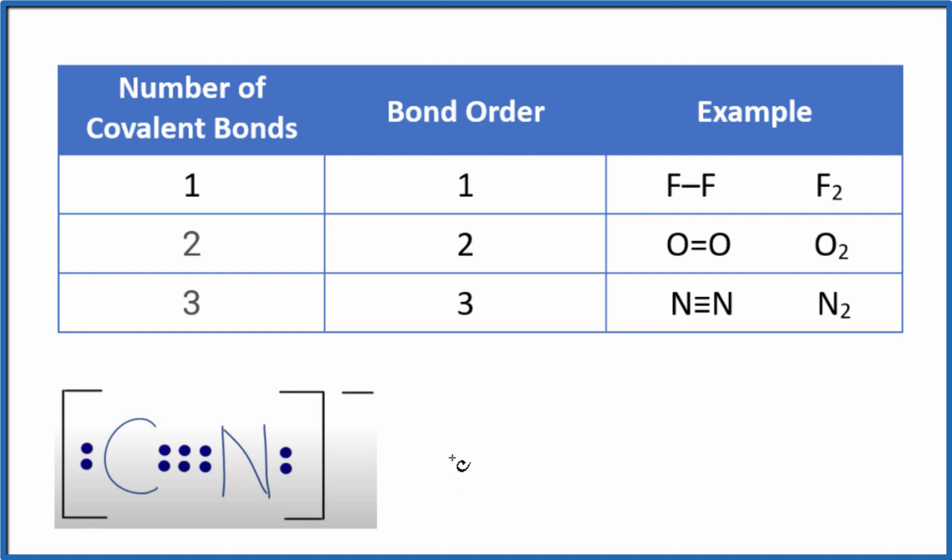you first need a valid Lewis structure. So this is the Lewis structure here. If you need help with that, there is a link at the end of this video on how to draw the Lewis structure for CN minus.